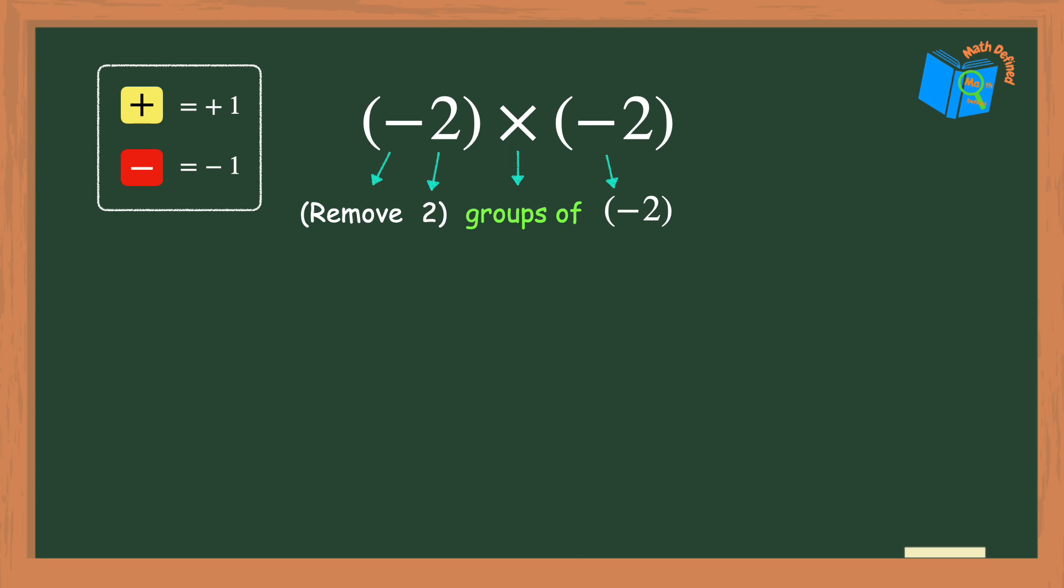But we have a problem here at the moment because how can we remove counters when we don't have any to remove? The solution is to start with enough zero pairs so that you can remove two groups of negative 2.